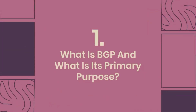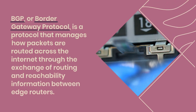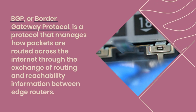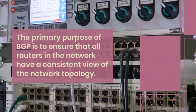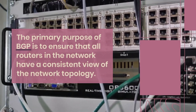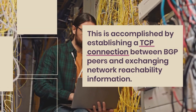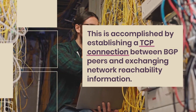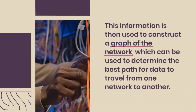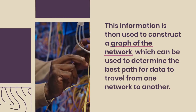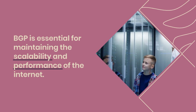What is BGP and what is its primary purpose? BGP, or Border Gateway Protocol, is a protocol that manages how packets are routed across the internet through the exchange of routing and reachability information between edge routers. The primary purpose of BGP is to ensure that all routers in the network have a consistent view of the network topology, accomplished by establishing a TCP connection between BGP peers and exchanging network reachability information. BGP is essential for maintaining the scalability and performance of the internet.